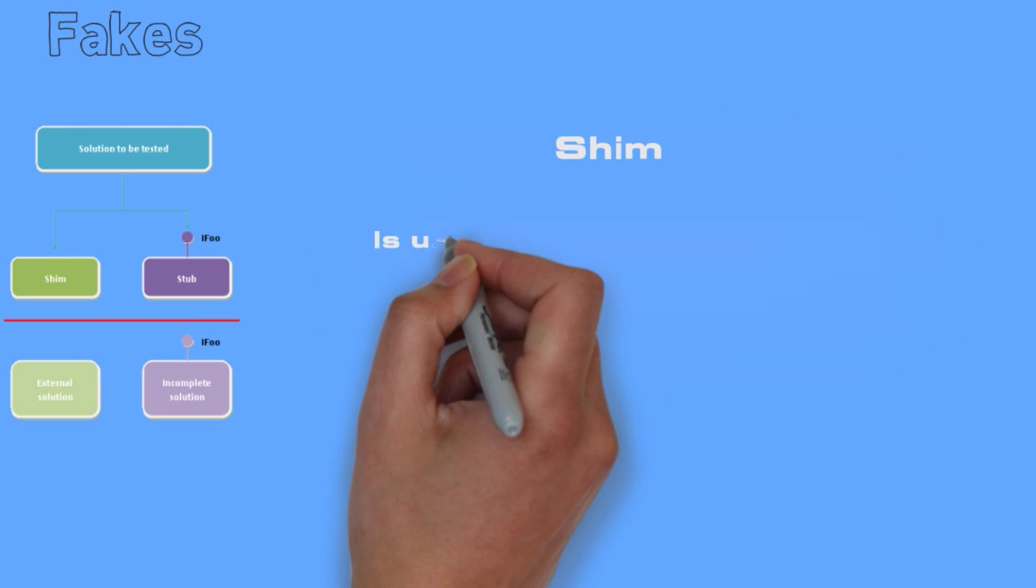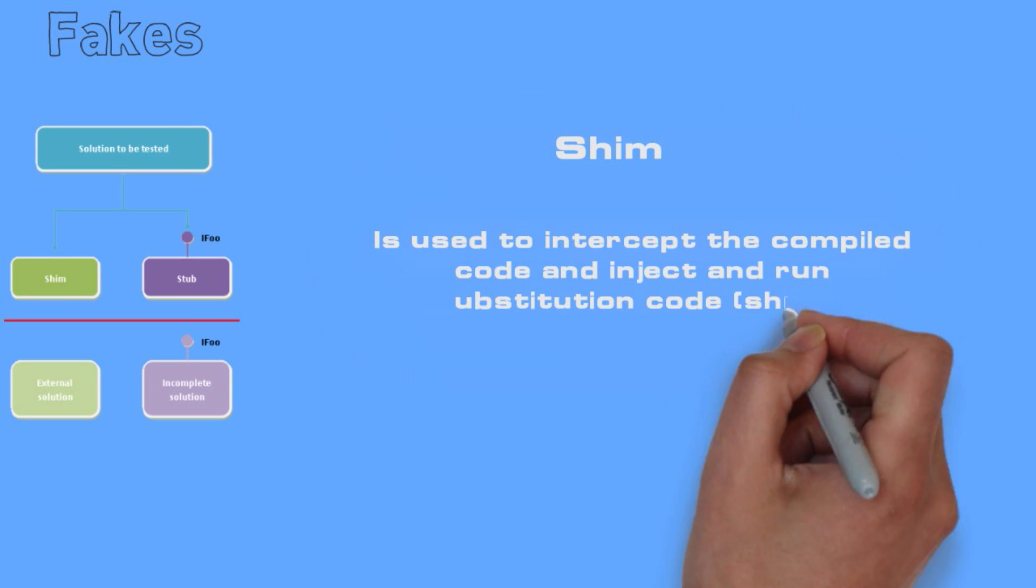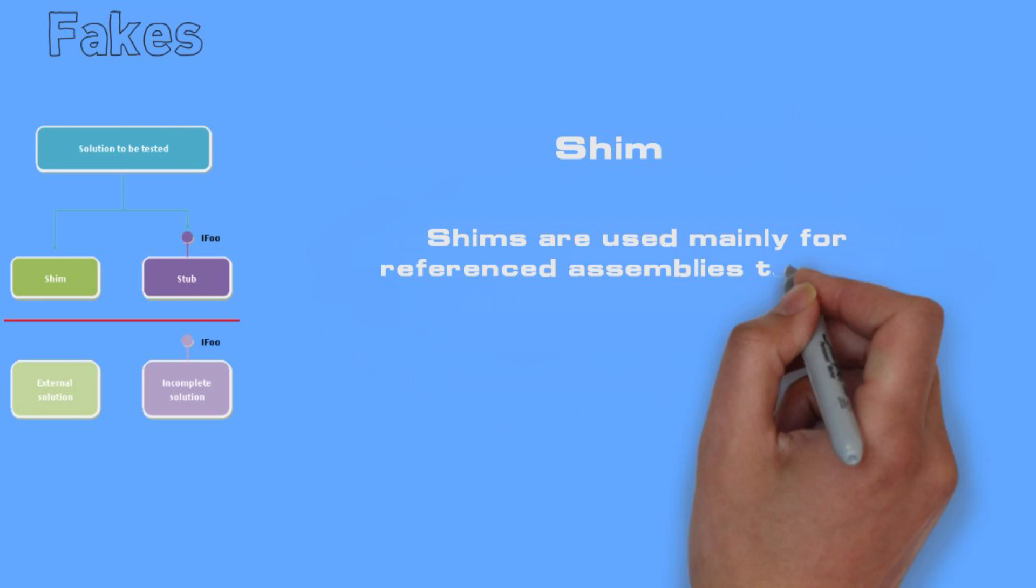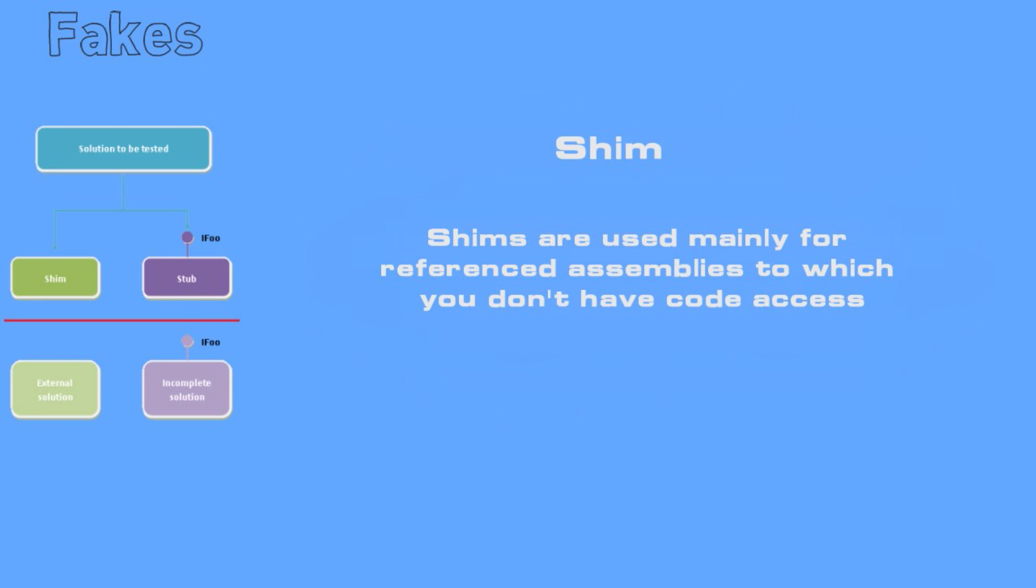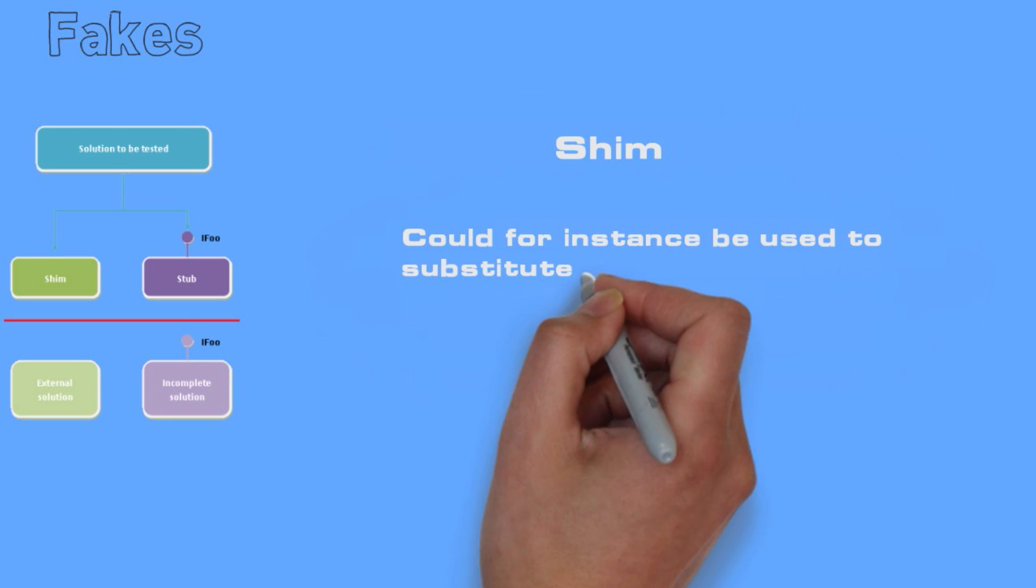Shim is used to intercept the compiled code and inject and run a substitution code. Shims are used mainly for referenced assemblies to which you don't have code access. It could for instance be used to substitute system code with your own code.